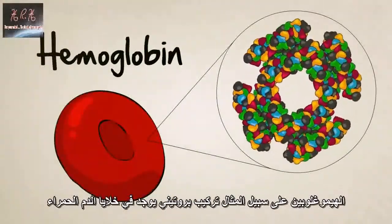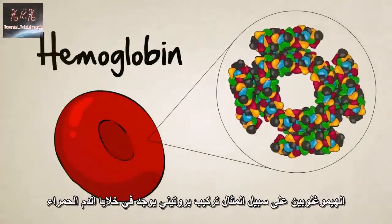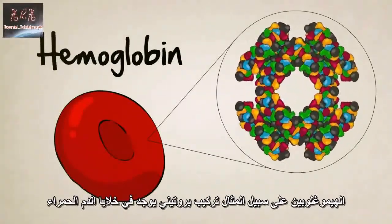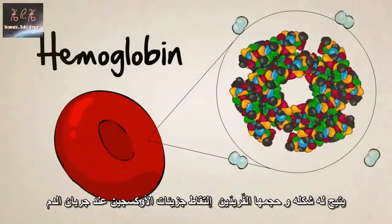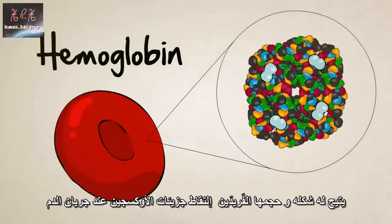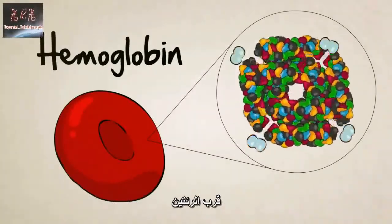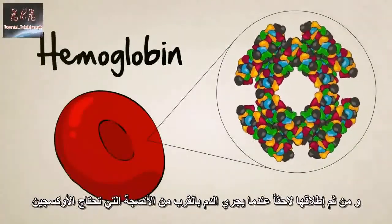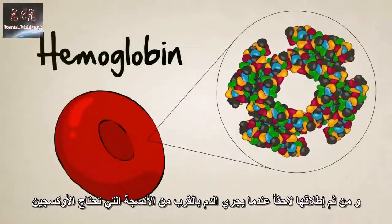Hemoglobin, for example, is a protein structure found in red blood cells. Its unique shape and size allow it to capture oxygen molecules when blood flows near the lungs, and then release them later when blood flows near oxygen-starved tissues.